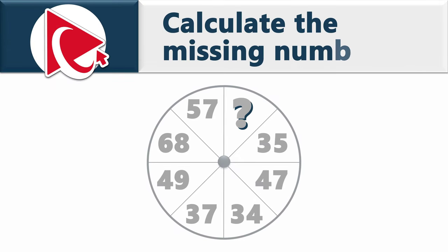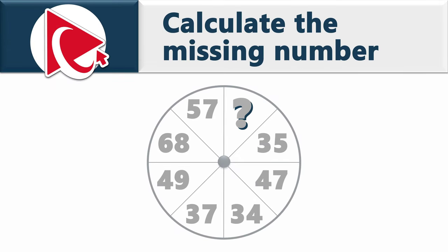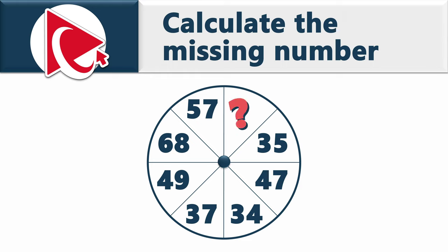You are presented with a circle broken down into eight equal parts. Each section has a number inside. The numbers are 35, 47, 34, 37, 49, 68, 57, and then comes the missing number, which you need to calculate and select out of four possible choices.